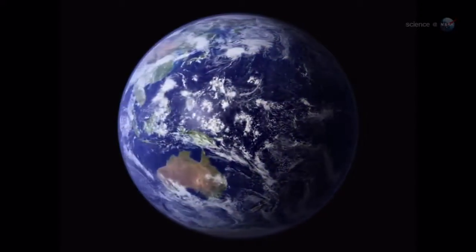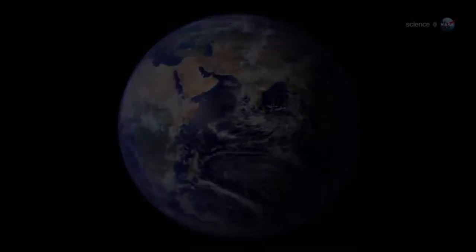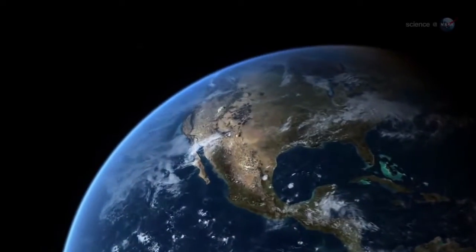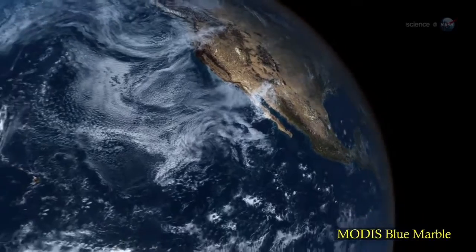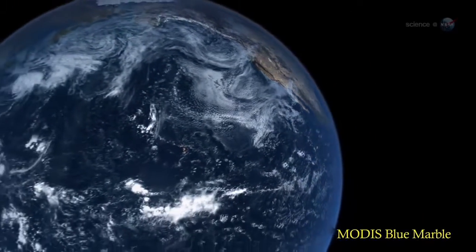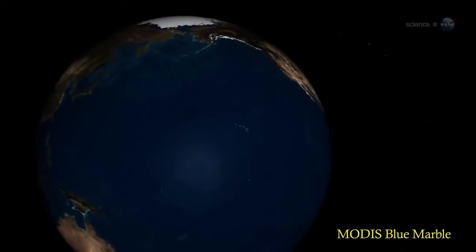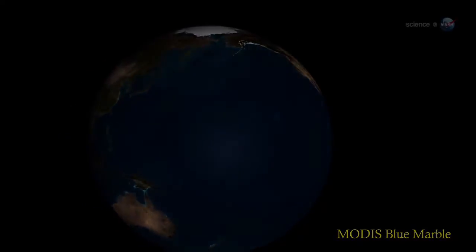how inappropriate to call this planet Earth when it is quite clearly ocean. Indeed, Earth is a water world. The dry land most of us call home covers less than a third of the planet's surface. More than 70% of Earth is underwater.